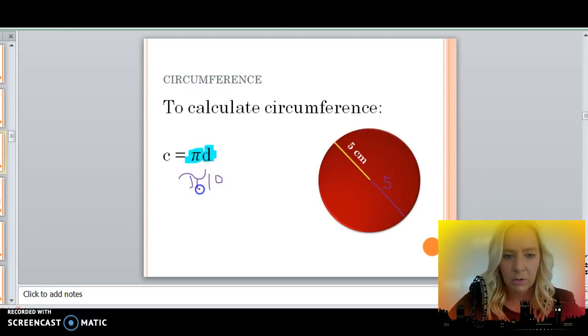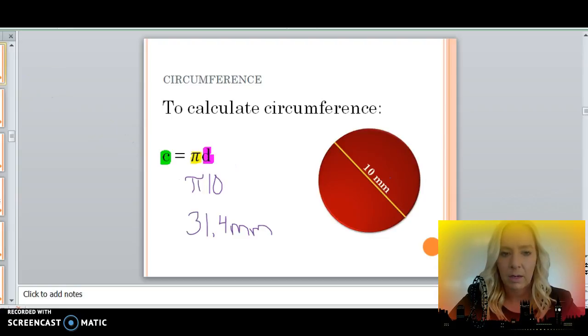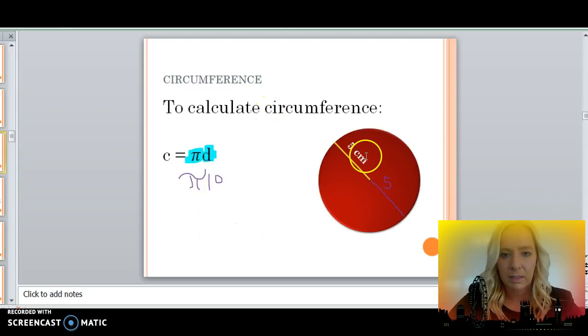It's really important to pay close attention to whether you're given the radius or if you're given the diameter. In our previous slide, 10 times pi is 31.4, in this case, centimeters.